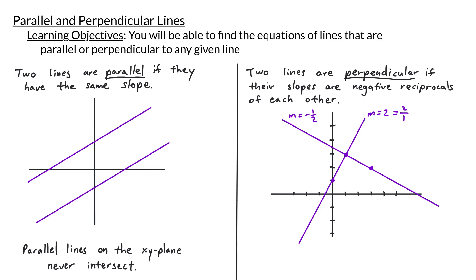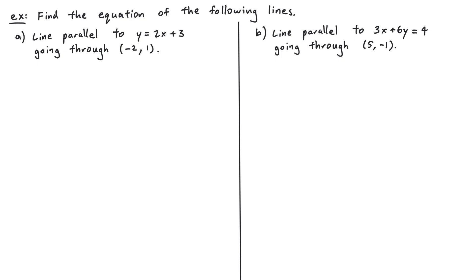While it is not obvious, perpendicular lines intersect at 90 degrees. Next we'll look at some examples of finding the equations of parallel and perpendicular lines. In our first example, we want to find the equation of a line that's parallel to y = 2x + 3 that goes through the point (-2, 1).